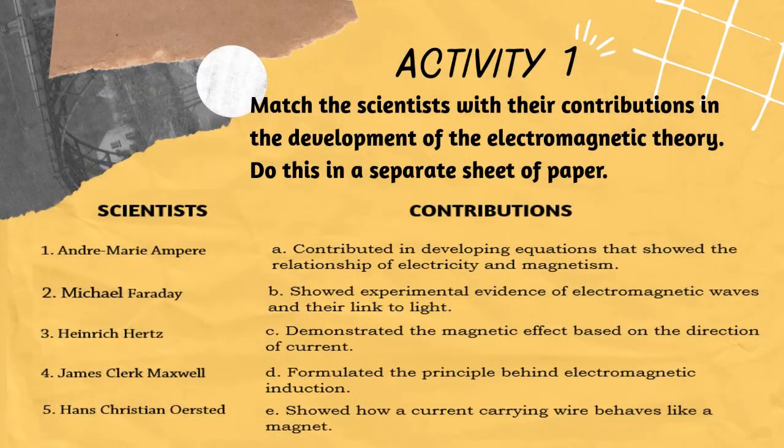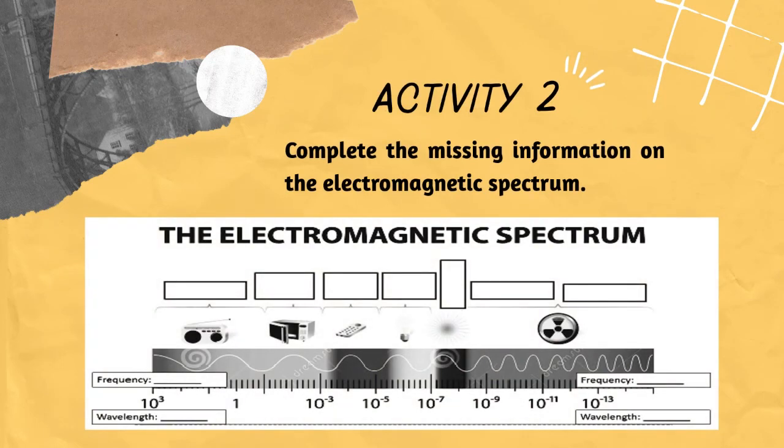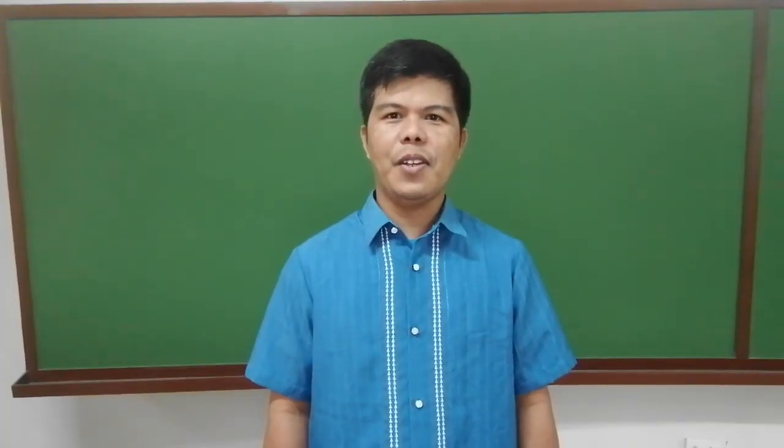For your activity one, match the scientists with their contributions in the development of electromagnetic theory. For your activity two, complete the missing information on the electromagnetic spectrum. That's all for today. Thank you and see you for our next lessons.